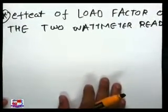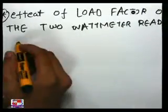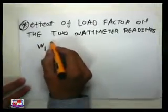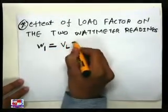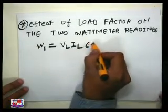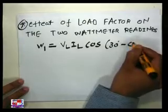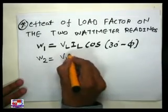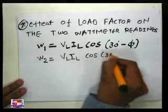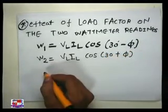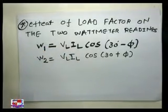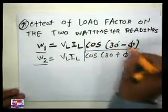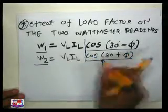Effect of the load factor on the 2 wattmeter reading. First, as the last session, we know: W1, the first wattmeter reading, is VL into IL into cos(30° − φ). Using the phasor diagram from the last section, we know W2 is VL into IL into cos(30° + φ). So in these equations we see what W1 and W2 readings are — they depend on cos(30° − φ) and cos(30° + φ), so it depends on the power factor.